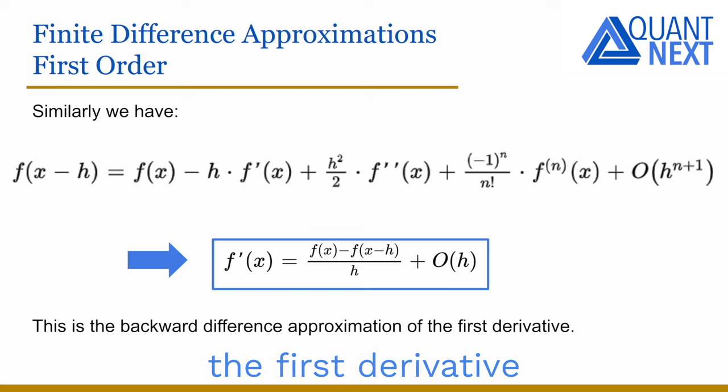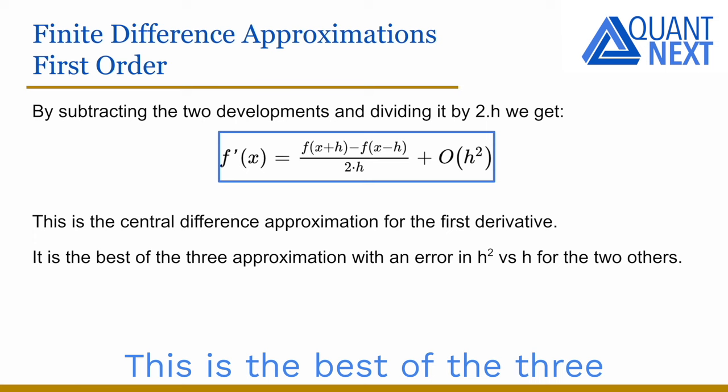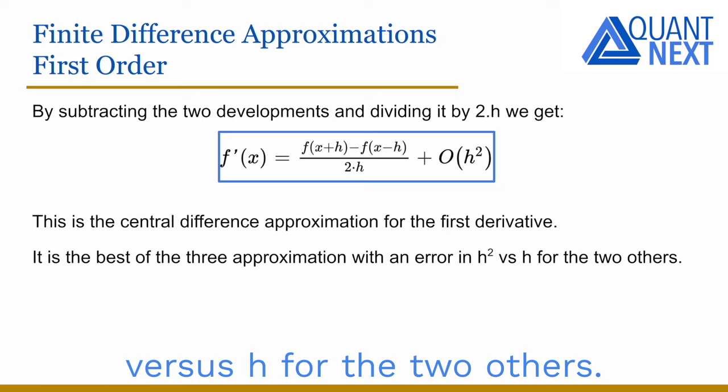By subtracting the two developments and dividing by 2h, we get the central difference approximation of the first derivative. This is the best of the three approximations, with an error in h² versus h for the other two.